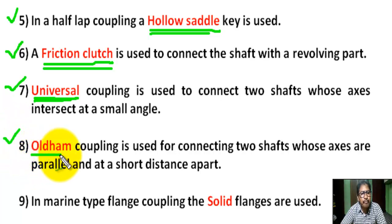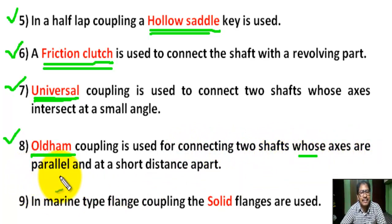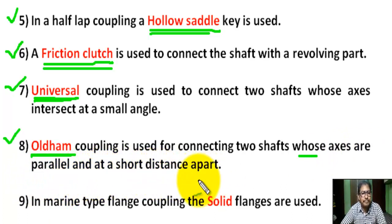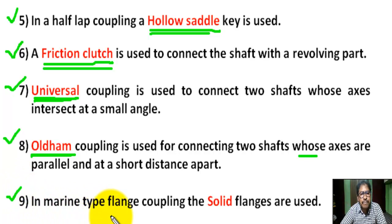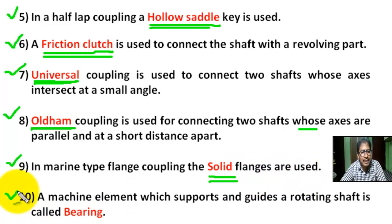Question number 8: Oldham coupling is used to connect two shafts whose axes are parallel and at a short distance apart. Question number 9: In marine type flange coupling, the solid flanges are used.